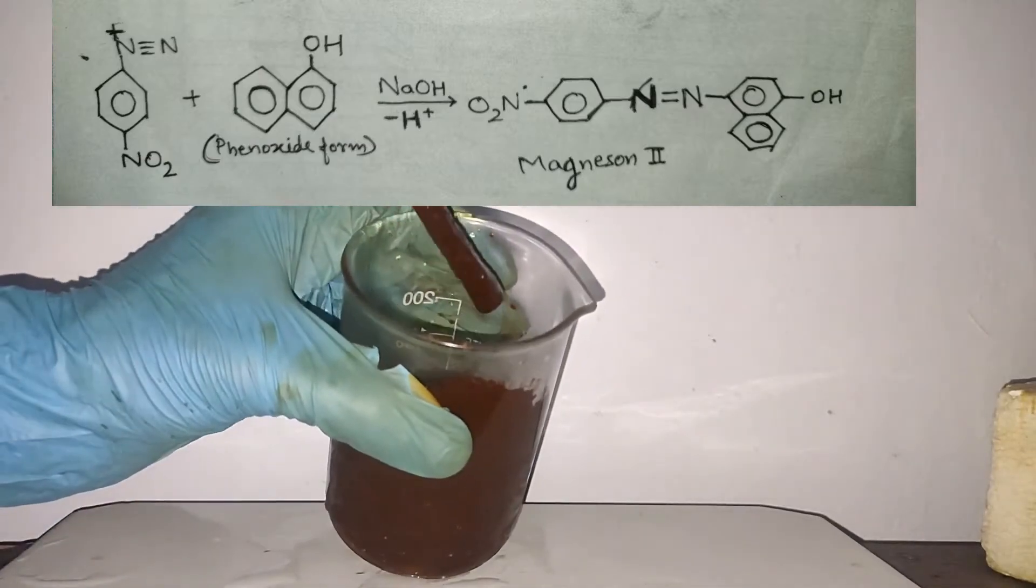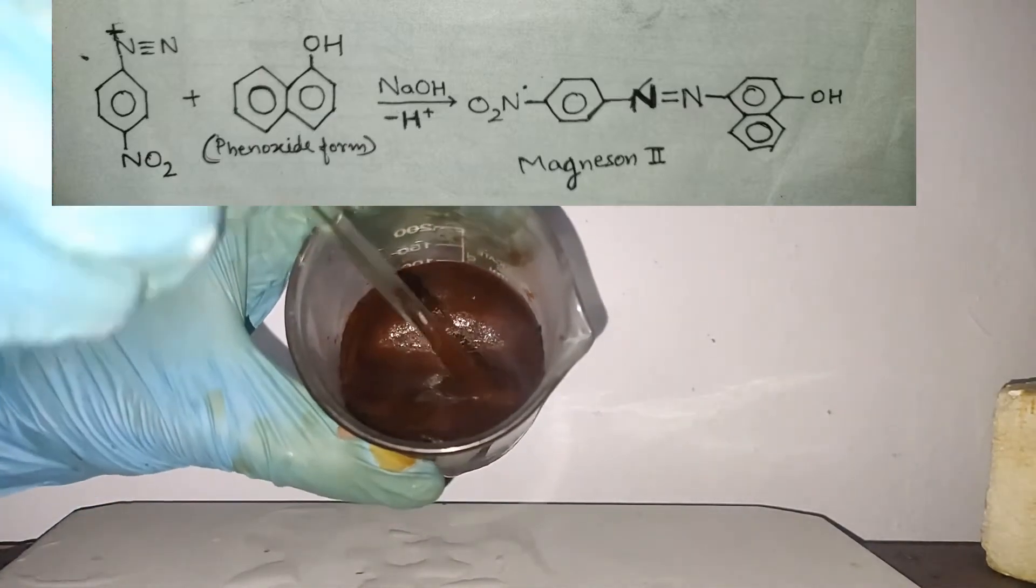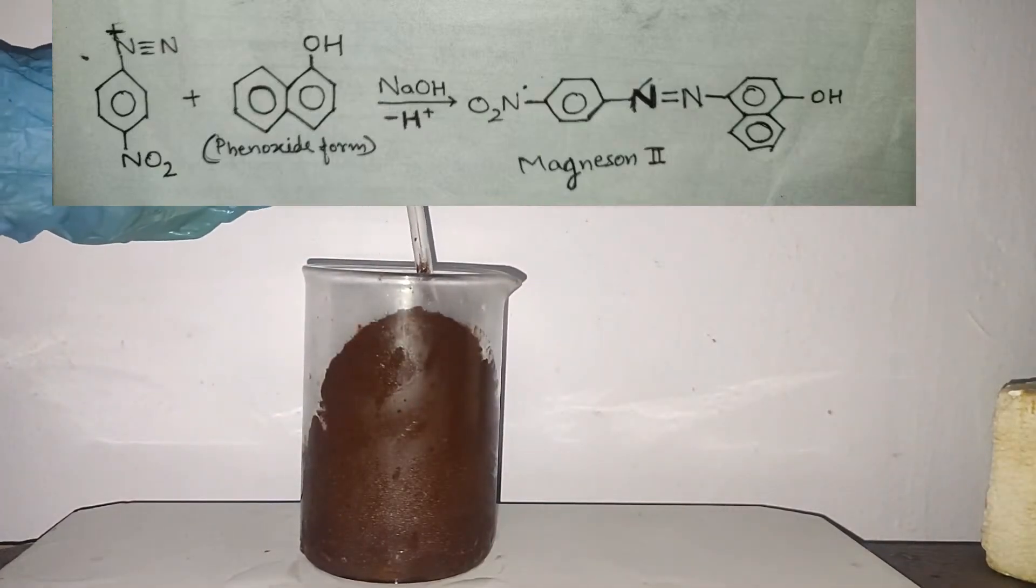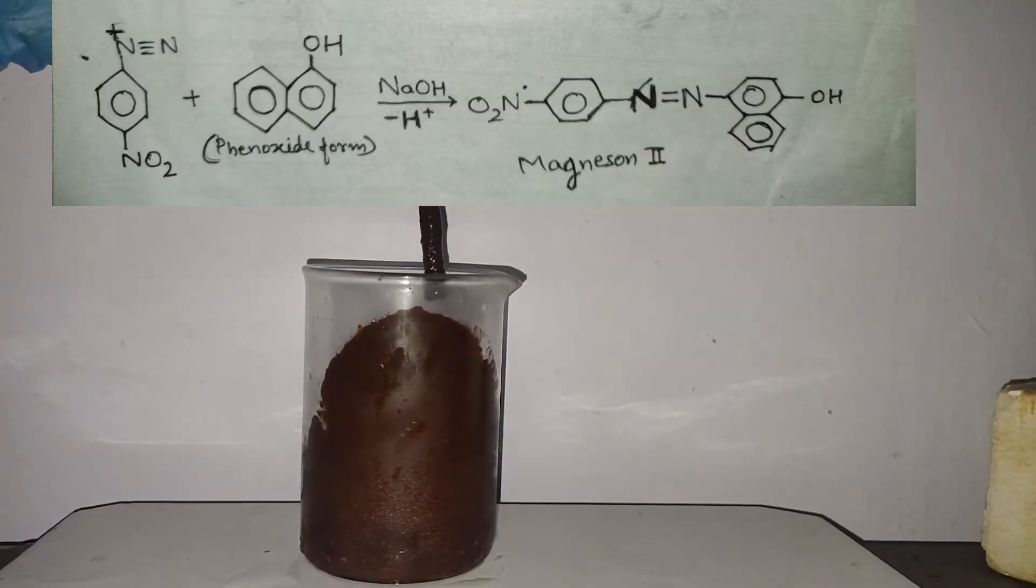The reaction shows that para-nitrobenzene diazonium salt reacts with 1-naphthol, which is in phenoxide form, to form Magneson 2.